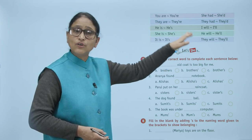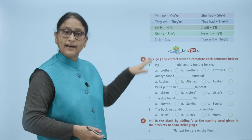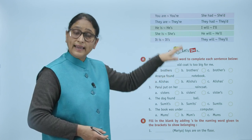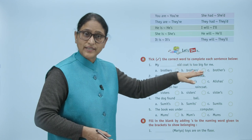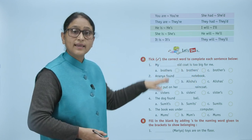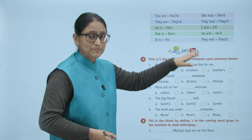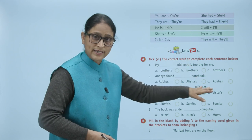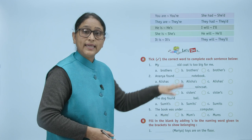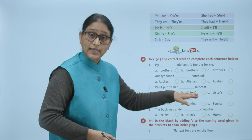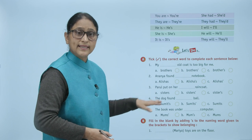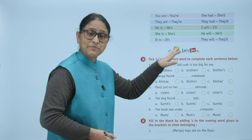She had becomes she'd. They are becomes they're. They had becomes they'd. He is becomes he's. I will becomes I'll — I apostrophe double L. She is becomes she's. He will becomes he'll — he apostrophe double L. It is becomes it's.